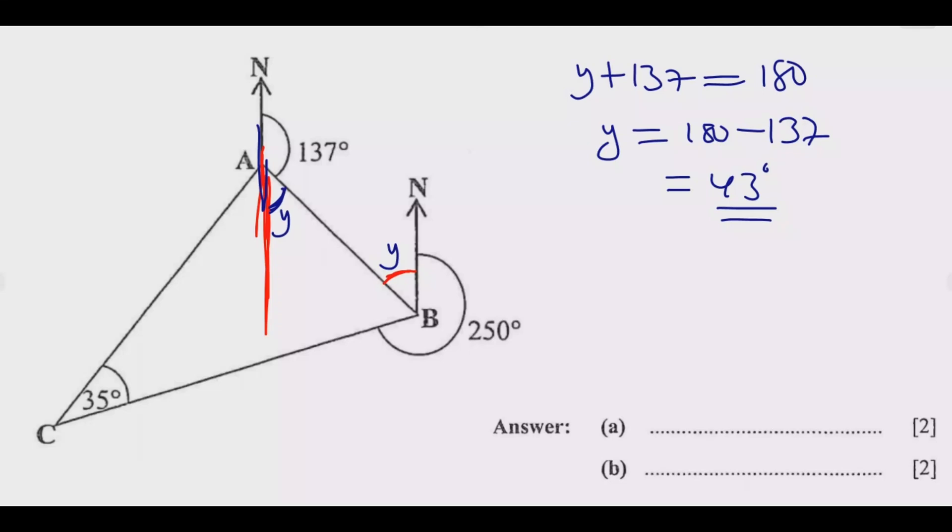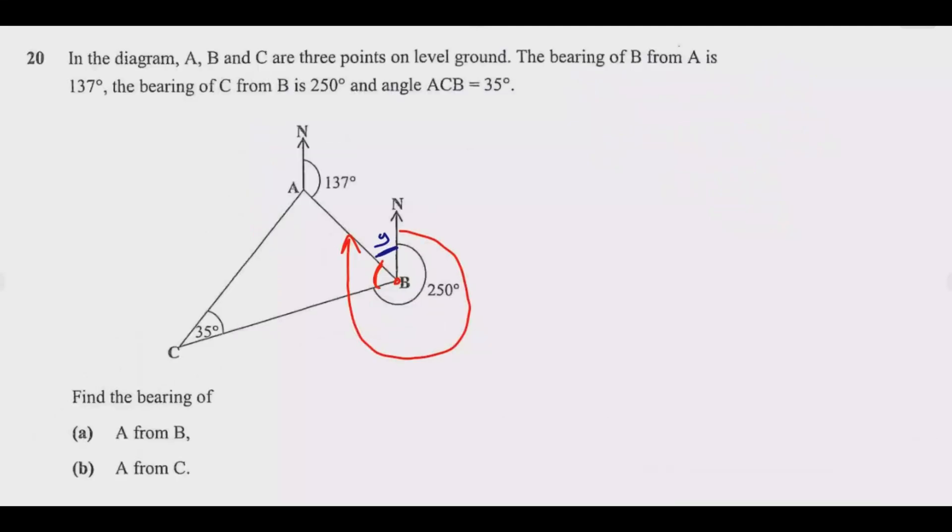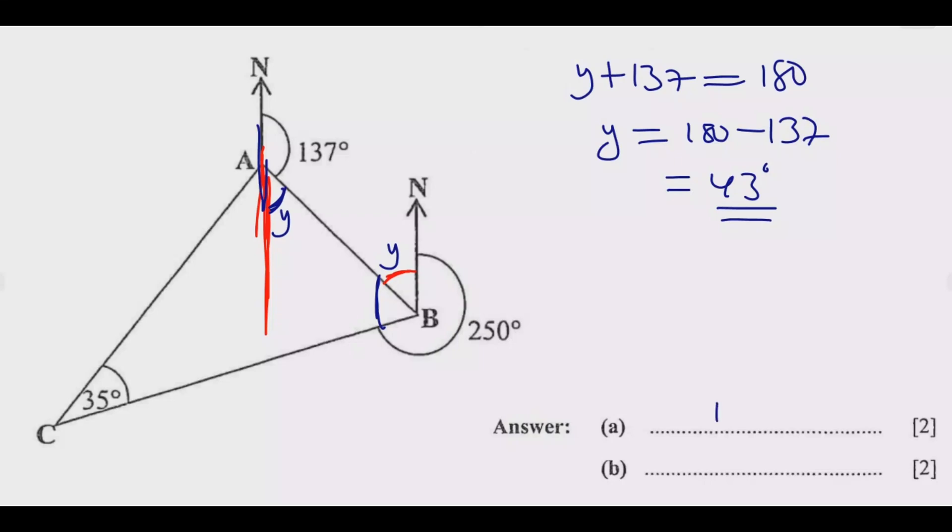Once you know what y is, then finding the bearing of A from B is just taking 43 from 360. So y is 43, so to answer that one, 360 which is a complete circle minus what we know which is 43, this will give me 317 degrees. So once you do that, you should be able to get the two marks. This is how simple it is.